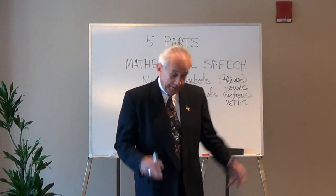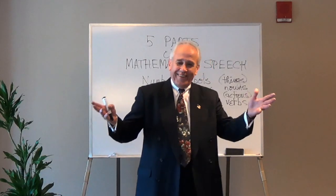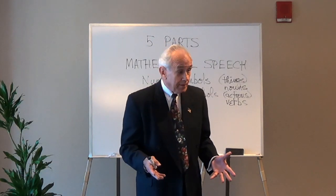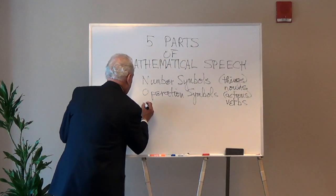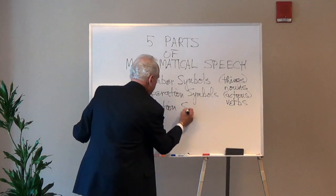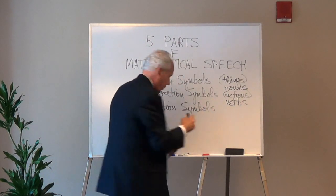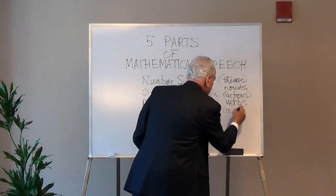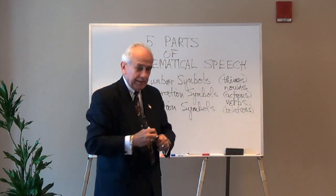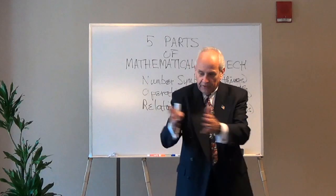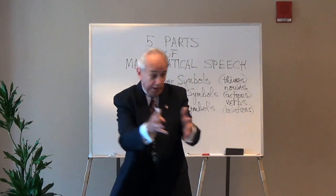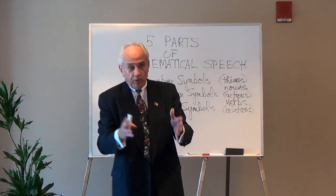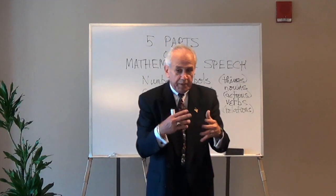You have your numbers, you have some operations, you can now say 3 plus 4. So what would be another important, necessary, useful symbol? Equal — is equal to. Relation symbols. We know the typical trichotomy: is equal to, is greater than, is less than. These are the relations of mathematics — statements of comparison. This is the same as this, this is greater than this. There's not an operation involved; it's just a statement of relationship.